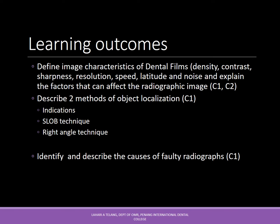The learning outcomes would be to define image characteristics of dental films — that is density, contrast, sharpness, resolution, speed, latitude, and noise — and to explain the factors that can affect the radiographic image. We will also describe two methods of object localization, their indications, the tube shift technique, and the right angle technique, as well as identify and describe causes of faulty radiographs.